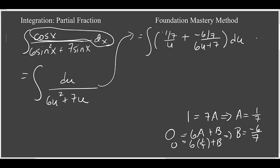And these are things that we can integrate. Here we'll have 1-seventh, the natural log of the absolute value of u, minus 6-sevenths, and here we'll have 1-sixth times the natural log of the absolute value of 6u plus 7.